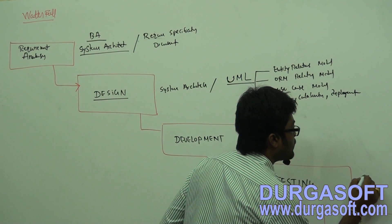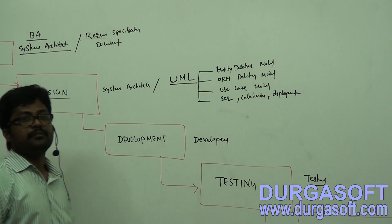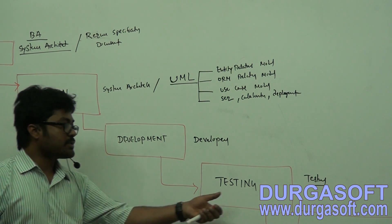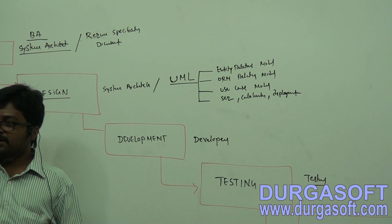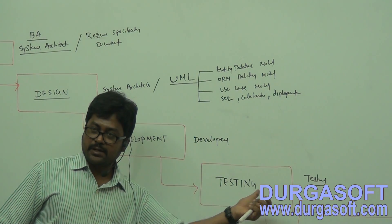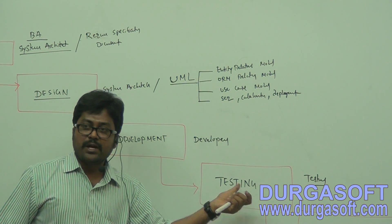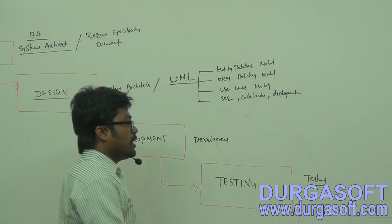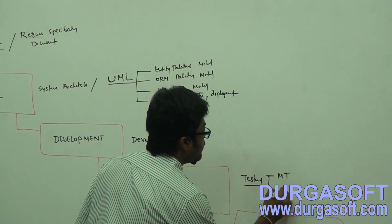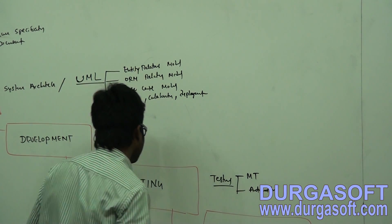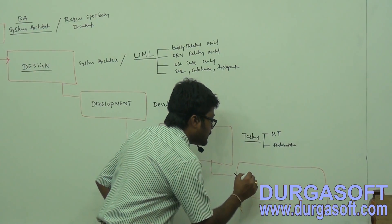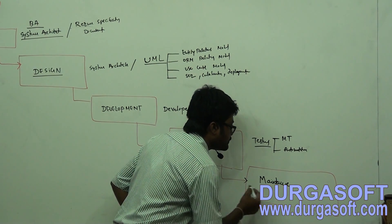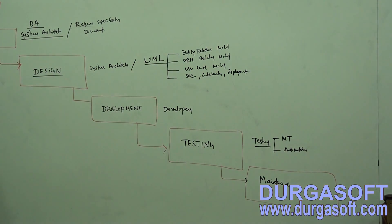In the testing phase, testers participate and perform either manual testing or automation testing, depending on the business functional requirements. After successful testing, the application is sent to the maintenance phase. Maintenance people are the DBA (Database Administrator) and server admin, who maintain the application. This completes the traditional software development life cycle - the waterfall model.